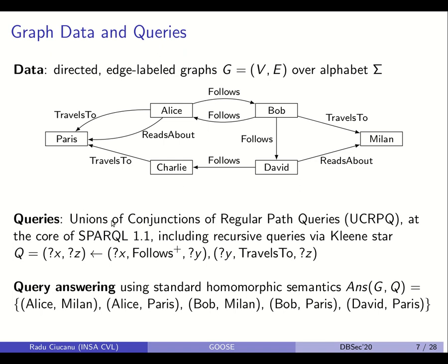As queries, we consider unions of conjunctions of regular path queries (UCRPQs), used in several practical languages including SPARQL 1.1. This class allows recursive queries specified via Kleene star. As an example, query Q has head (X, Z) and a body which is a conjunction of regular expressions. We look for pairs of nodes X, Z such that one can travel from X to a node Y with a path whose edge labels form a word in the language follows+, and then from Y to Z with an edge labeled travels to.